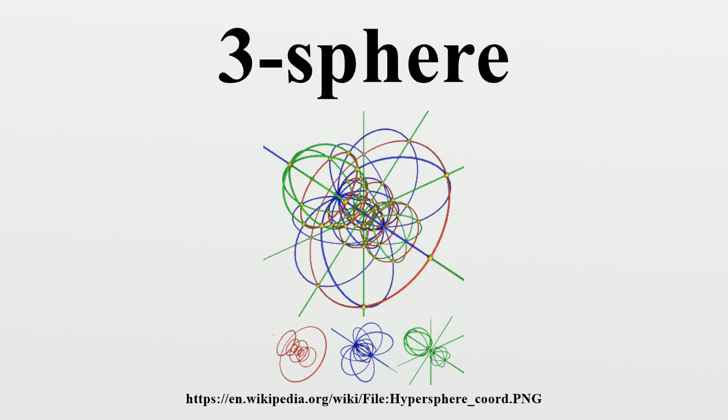Writing in the American Journal of Physics, Mark A. Peterson describes three different ways of visualizing three spheres and points out language in the Divine Comedy that suggests Dante viewed the universe in the same way.